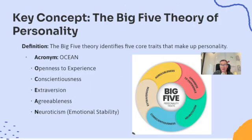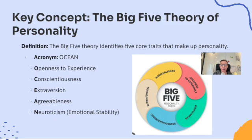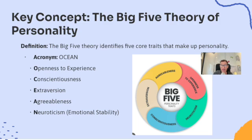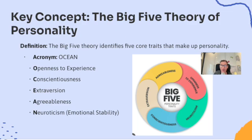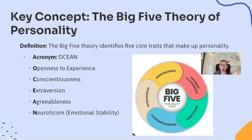We're going to start with the Big Five theory of personality. The Big Five theory identifies five core traits that make up personality. We use the acronym OCEAN to remember them: O for openness to experience, C for conscientiousness, E for extroversion, A for agreeableness, and N for neuroticism, which is emotional stability. These traits describe different aspects of our behavior and tendencies, and everyone falls somewhere on a spectrum for each one.